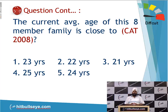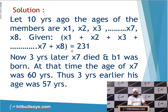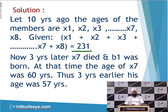Let's first try to solve this question by the traditional approach. Let's assume that 10 years ago, the ages were X1, X2, through X8, and their sum is given as 231 years. Now three years later, an elderly member X7 dies and B1 was born. At that time, the age of X7 was 60 years, so three years earlier he must have been 57 years old.